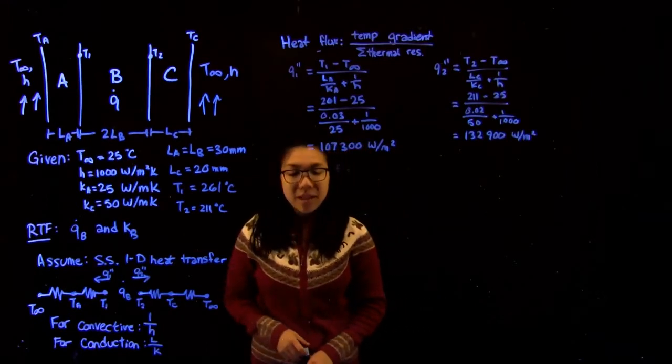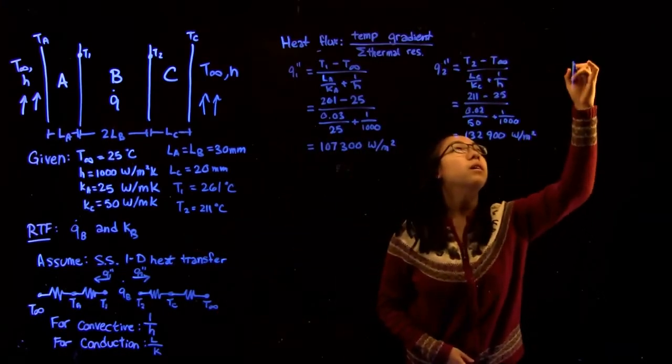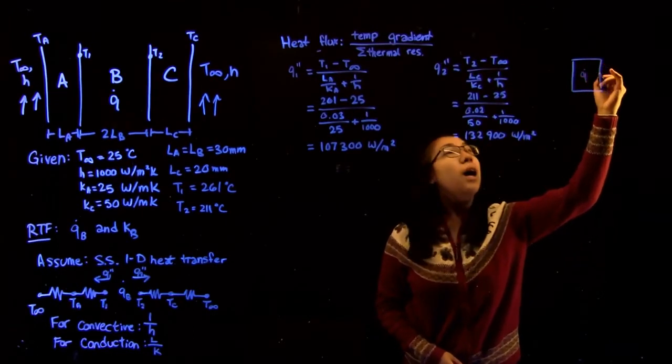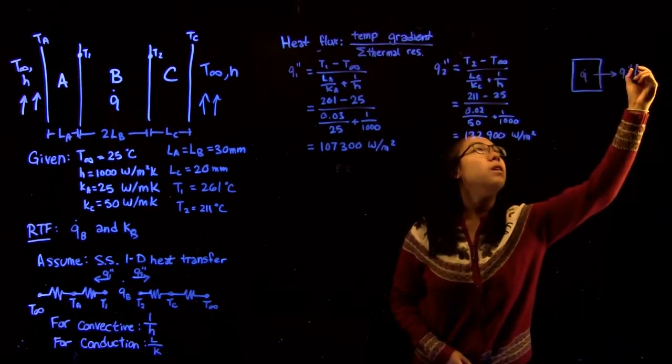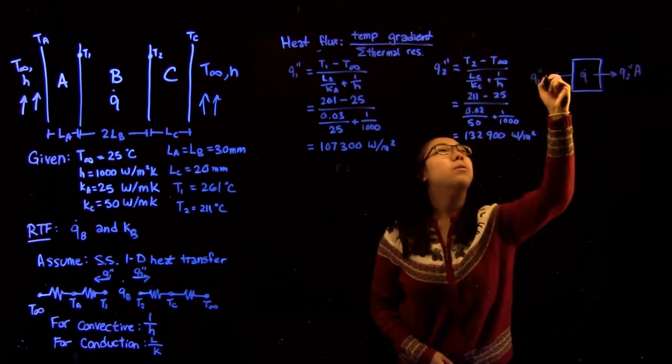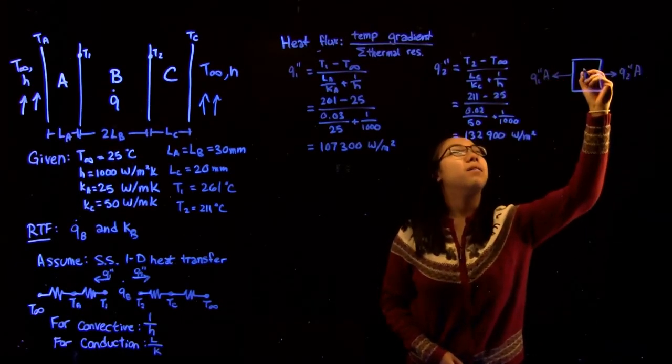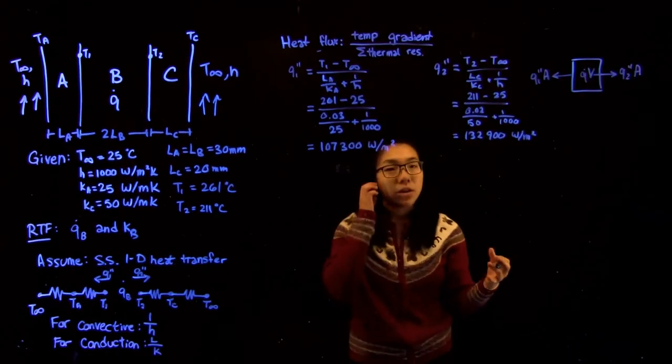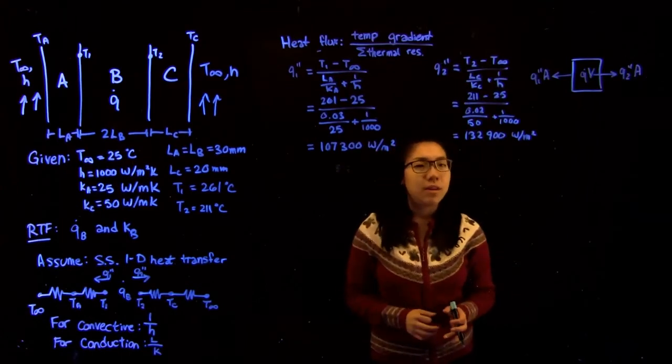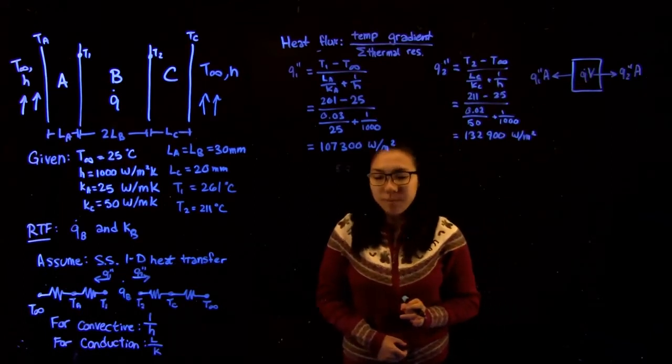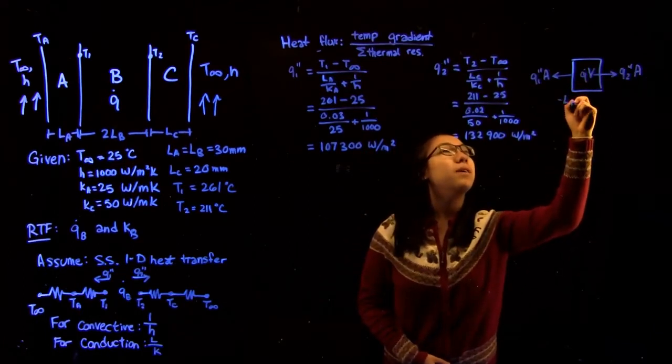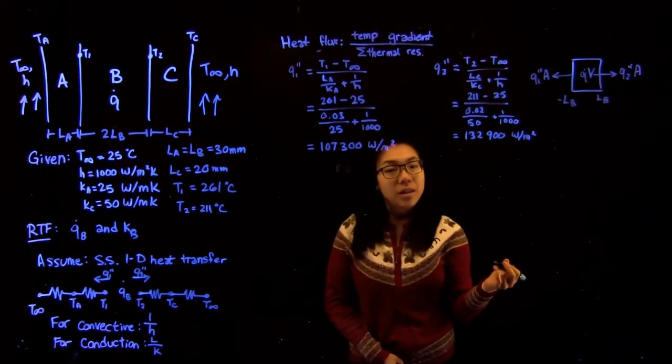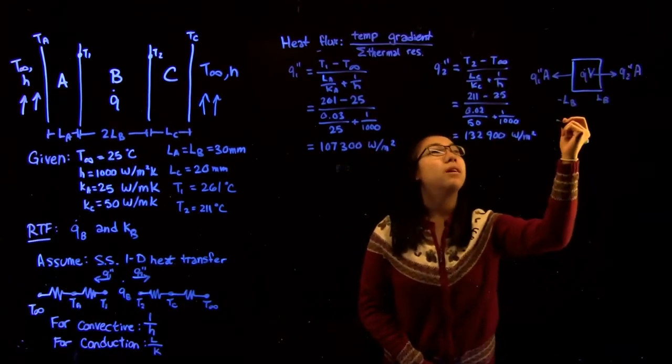Now we want to consider an energy balance on volume B. We have Q being generated in the center where we have two fluxes, Q2 and Q1 times the area. Because the value Q over here is a volumetric value, if we want to do the complete energy balance to match units, we just want to multiply this value by the volume. The dimensions we have here are minus LB and positive LB. Since we already have the fluxes, we can just do an energy balance on this.